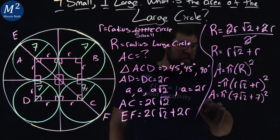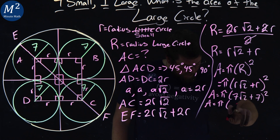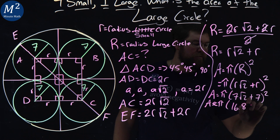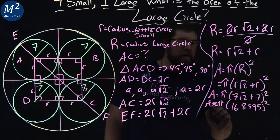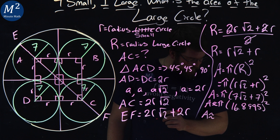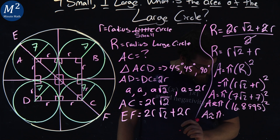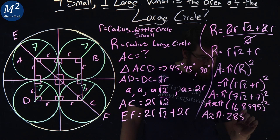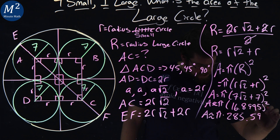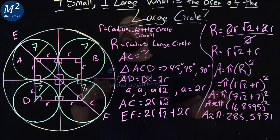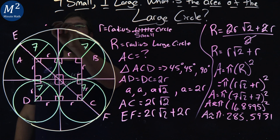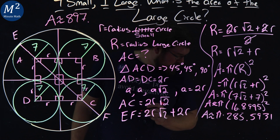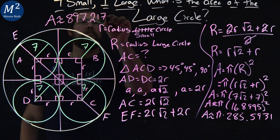This comes out to be area equals π times approximately 16.8995, all squared. So area equals π times 285.5931, which equals approximately 897.2172 units squared.